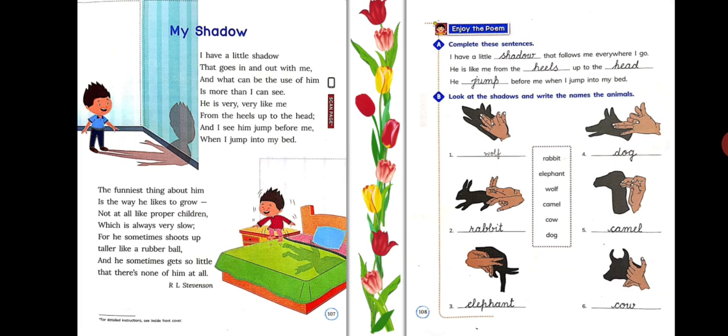In this stanza, the poet expresses his opinion that he finds his shadow as a companion or you can say as a partner who follows him wherever he go. And he wonders what is the use of it. Just moving, he can see it. Then he added that his shadow looks just like him from the tip to the toe. And when he is about to jump on his bed, his shadow jumps before him.